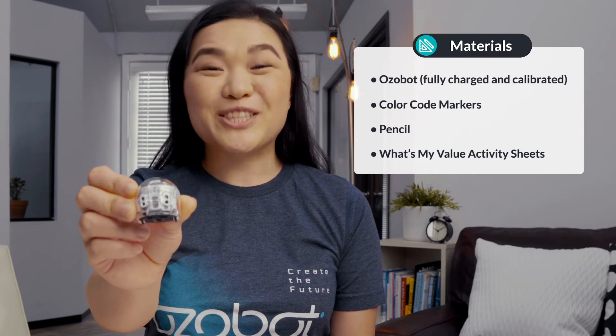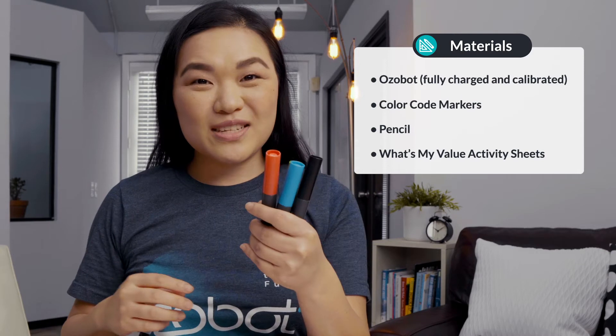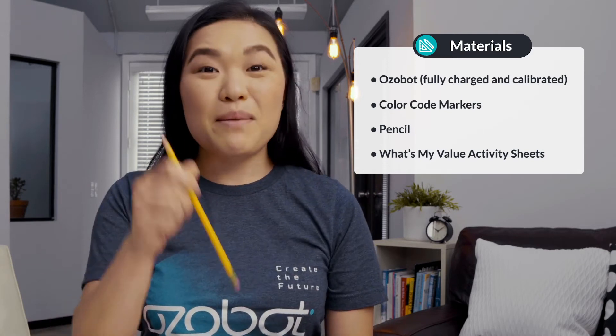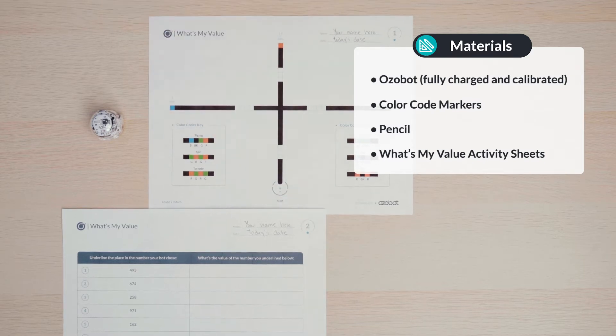In today's lesson, you will need an Ozobot fully charged and calibrated, color code markers, a pencil, and your What's My Value activity sheets. Make sure you have both pages.